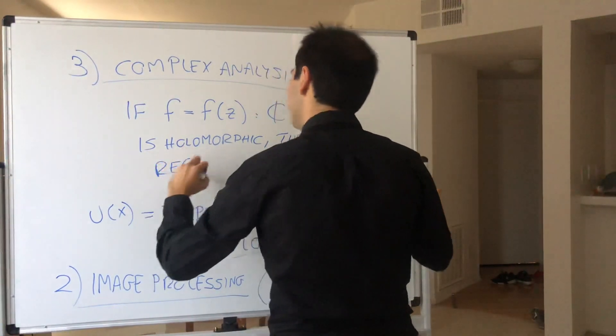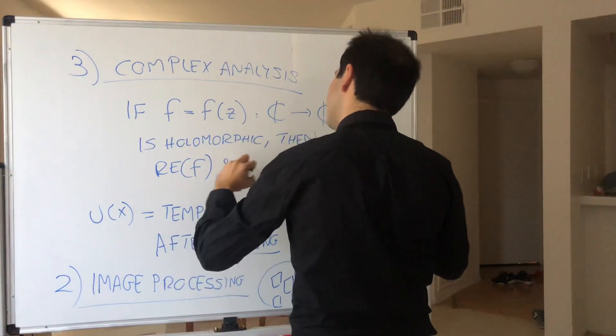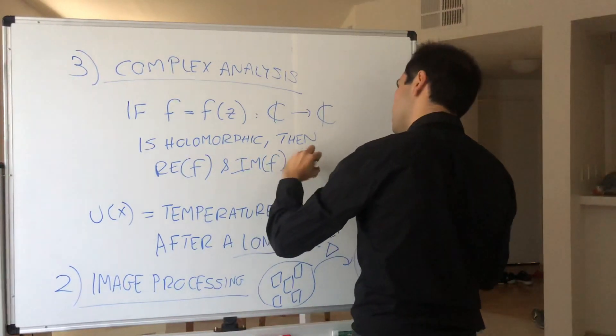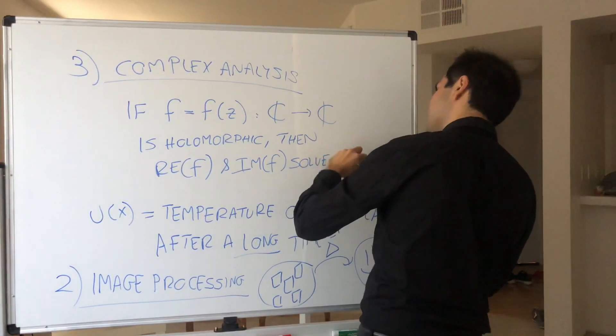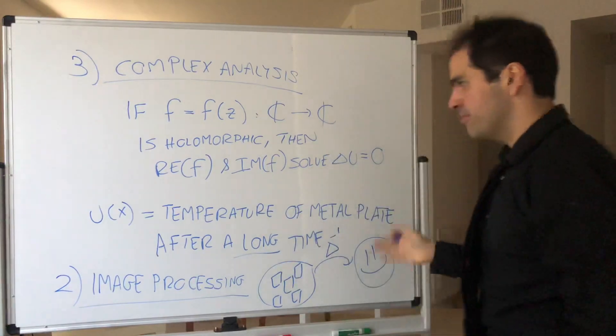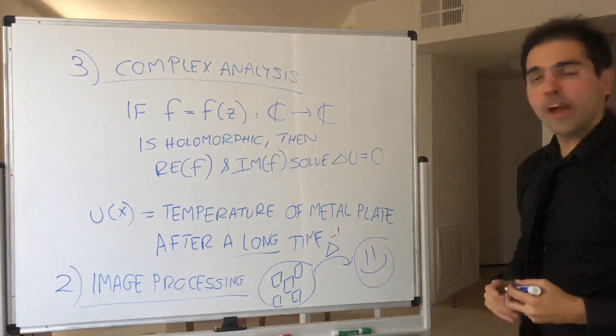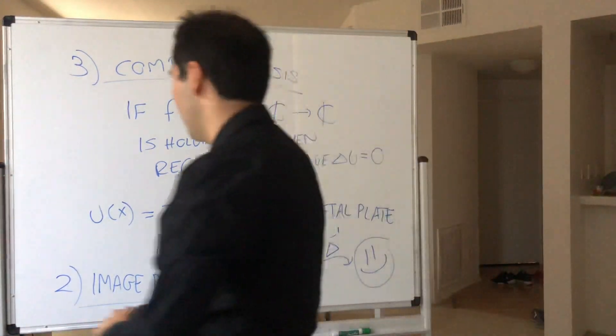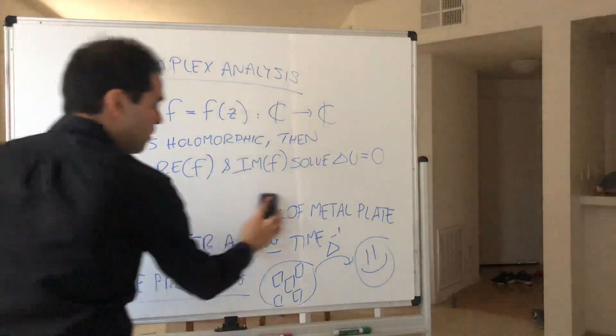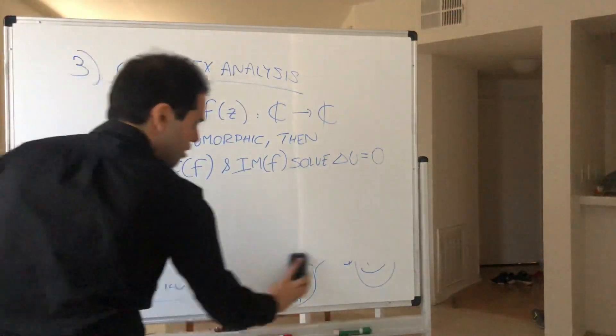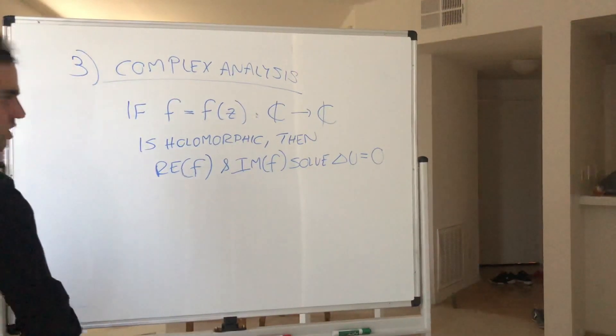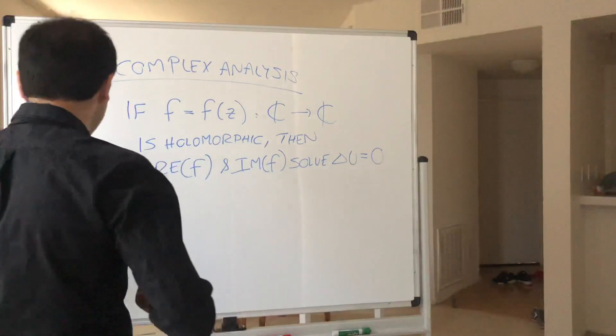then both the real part and the imaginary part solve Laplace's equation. So real of f and imaginary part of f solve Laplace's equation. And indeed, that's another way of getting solutions of Laplace's equation, namely, take any holomorphic function you want and just take the real and imaginary parts.